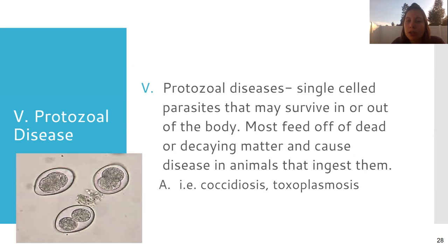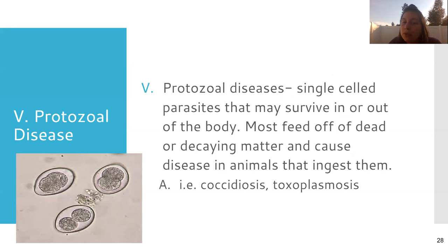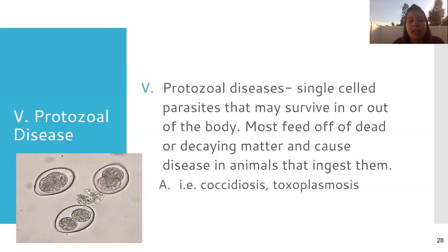Protozoan diseases — a protozoan is a single-cell parasite. Examples include coccidiosis, which we're going to talk about a little bit later in this PowerPoint, and toxoplasmosis, which we talked about in Animal Science 2. It's just a really tiny parasite that lives in the animal and can live in different places.